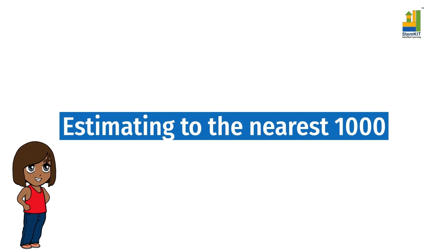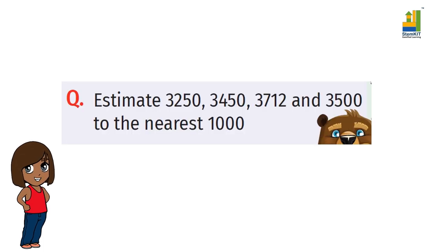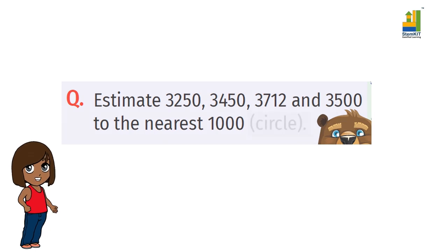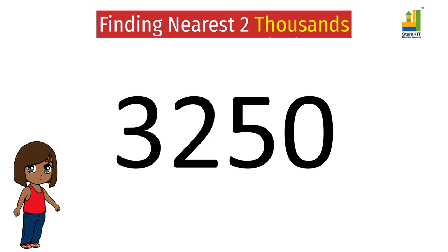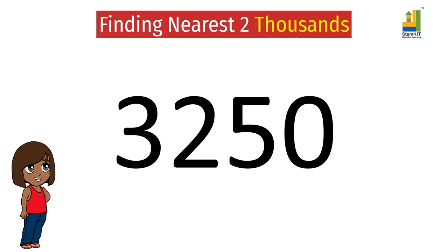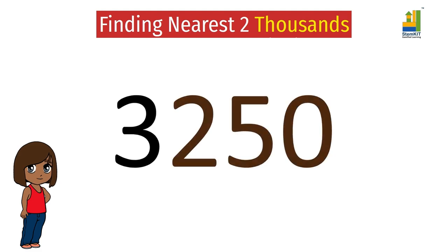Let's take a question: estimate the numbers to the nearest one thousand. Let us take the first number — 3250. How many zeros does a thousand have? Three. So, to estimate to the nearest thousand, convert the last three digits of any number to zero.